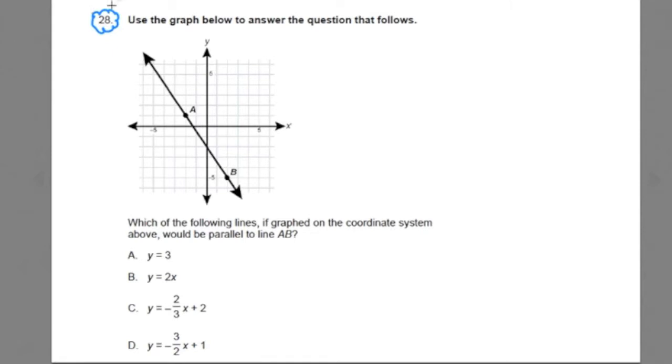I'll start by reading over number 28 and then we'll work through some of the math. For number 28, use the graph below to answer the question that follows. We're given a graph, we have an x horizontal axis, a y vertical axis, and we have this line AB. It says, which of the following lines, if graphed on the coordinate system above, would be parallel to line AB?